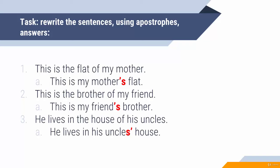The second exercise: rewrite the sentences using apostrophes. 'This is the flat of my mother.' One mother, one flat — 'This is my mother's flat.' 'This is the brother of my friend.' One friend — 'This is my friend's brother.'